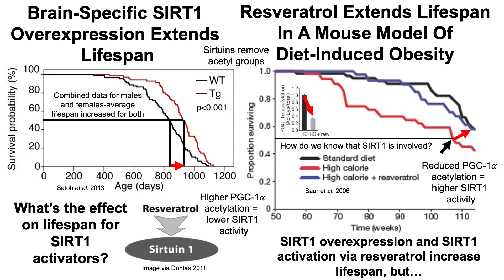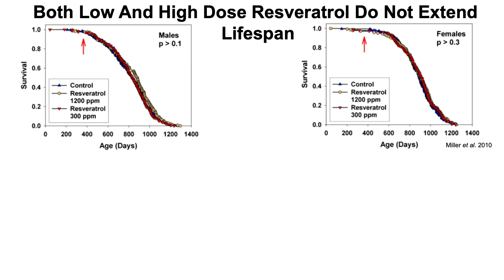SIRT1 overexpression in the brain and SIRT1 activation via resveratrol increased lifespan, but both low and high dose resveratrol have been shown to not extend lifespan in other studies. Low dose was 300 ppm and high dose was a four-fold higher concentration at 1200 ppm. The p-values for both males and females were higher than 0.05, showing that neither dose significantly extended lifespan.